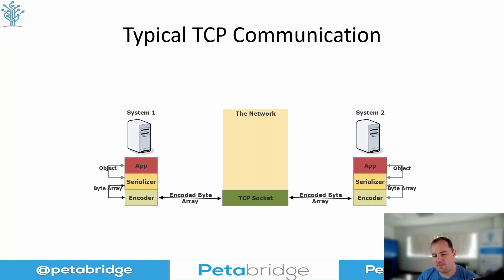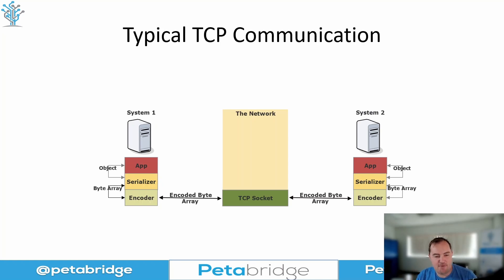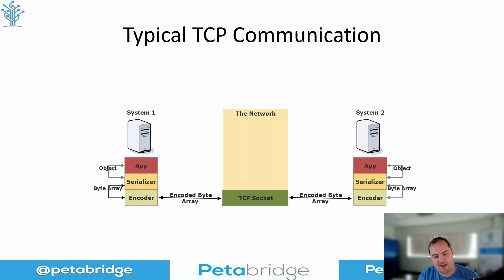What that typically looks like is we have to perform frame length encoding, where a byte basically indicates how big the next message is. We pull all those messages off of the TCP buffer, deserialize them, and then route them to the server application, which processes them and runs this exact same process in reverse — transmitting data back to the client, which then has to be decoded, deserialized, and routed to the application.